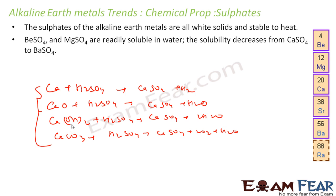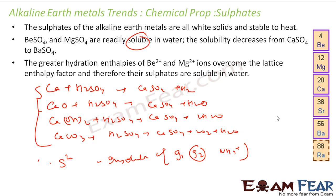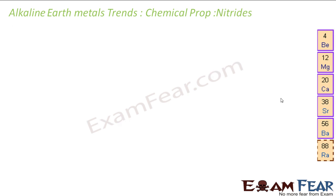The alkaline earth metal sulfates are soluble in water. The rule is that for group 2 sulfates, they are mostly soluble, but the solubility decreases as you go down the group. The reason is hydration enthalpy: as you go down the group, atomic size increases, so hydration enthalpy decreases. Since solubility also depends on hydration enthalpy, the solubility also decreases going down the group.